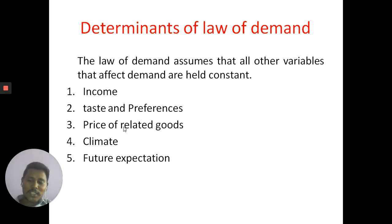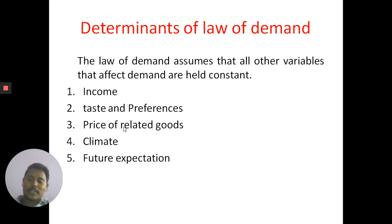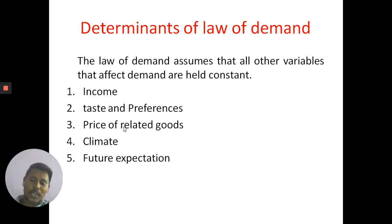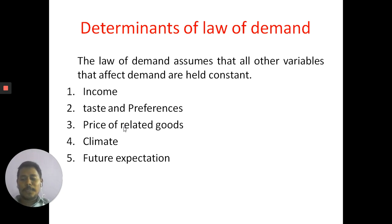Let us understand the determinants or factors affecting the law of demand. We say that when price increases demand decreases, and when price decreases demand increases, but other things remain constant. The things that should remain constant include income, taste and preference, price of related goods, climate, and future expectations.